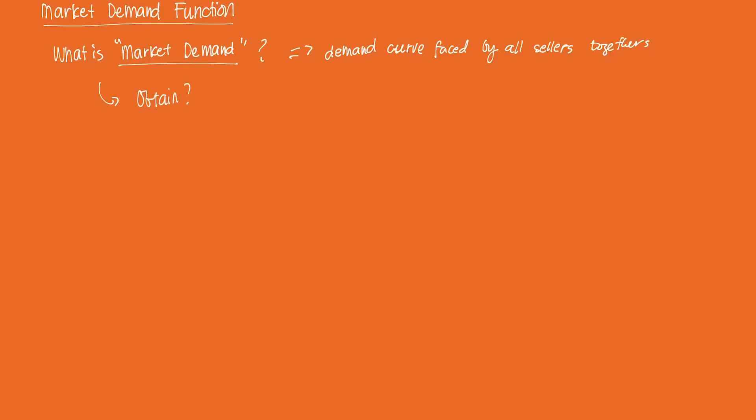How we obtain that is kind of intuitive. So what we do is recall an individual consumer's Marshallian demand, so that's XI star, is some function of prices, say P1, P2, and their own income. And their Marshallian demand is the amount that they will demand for a particular good or service.